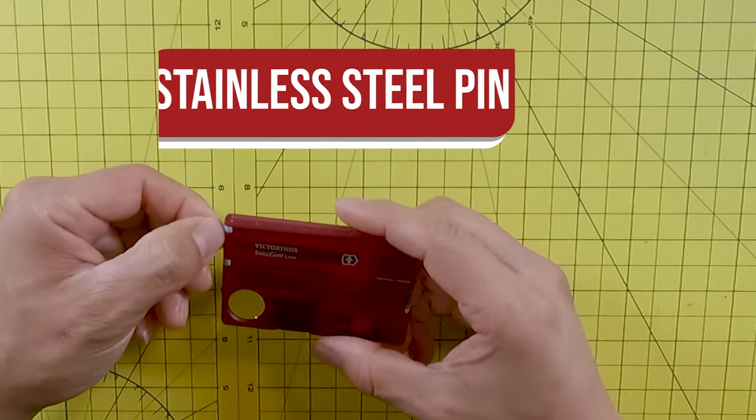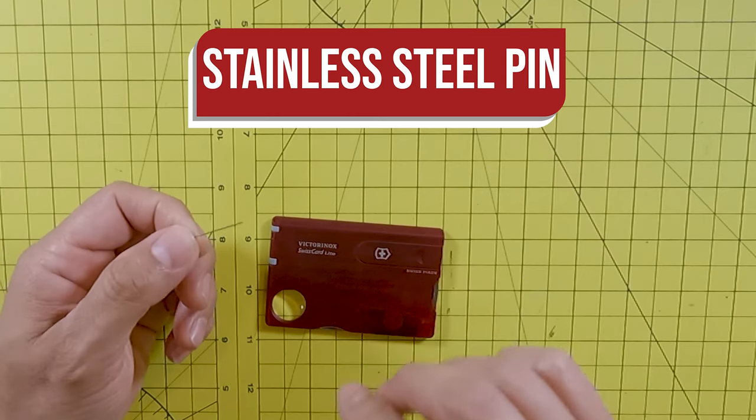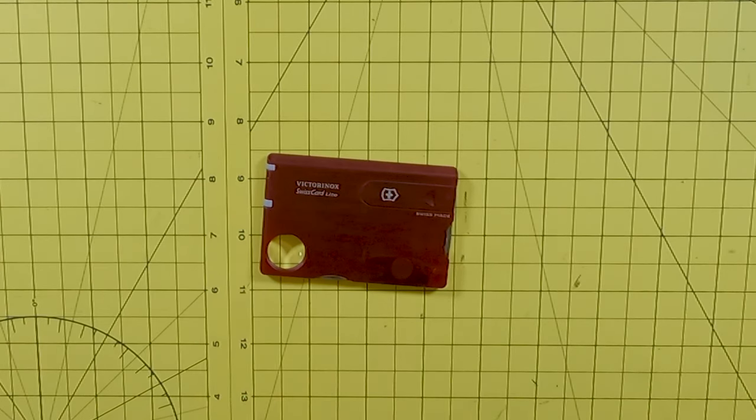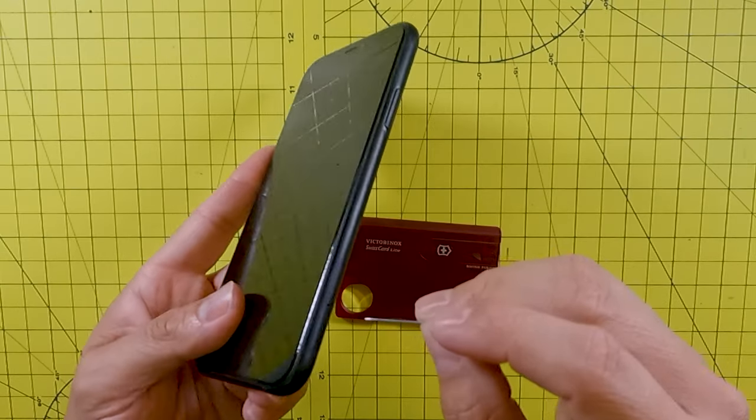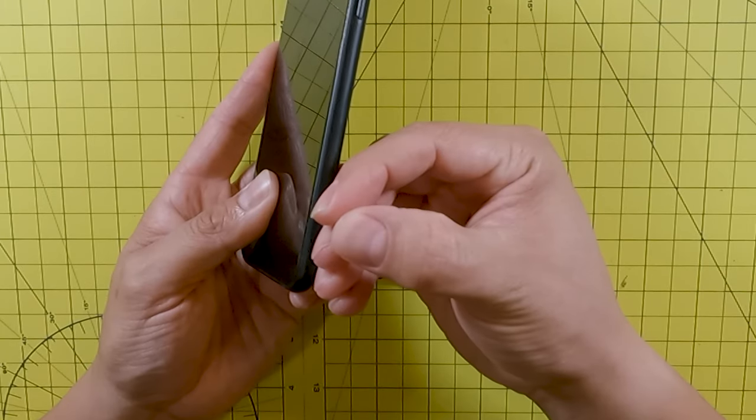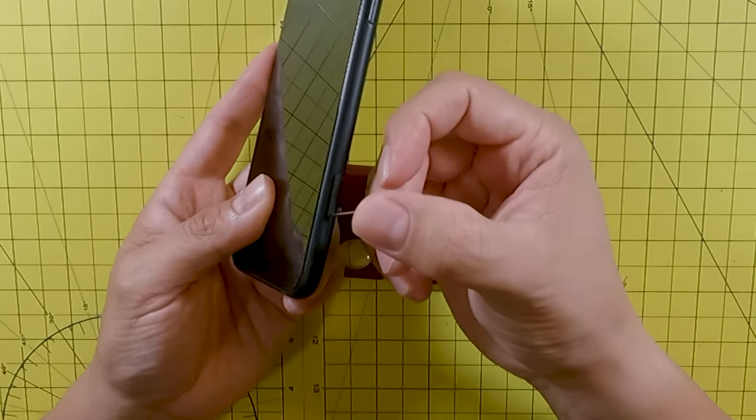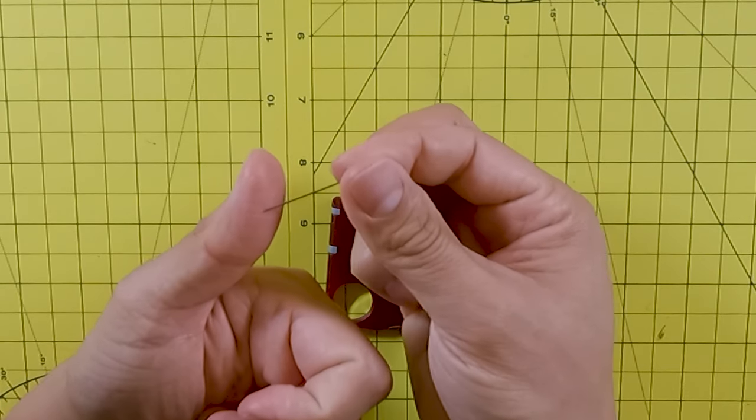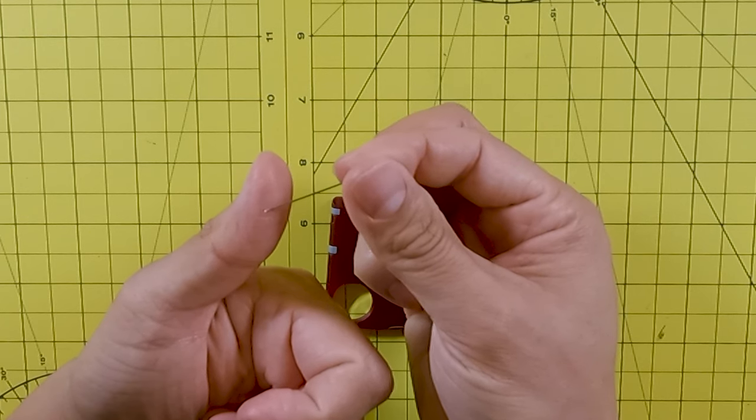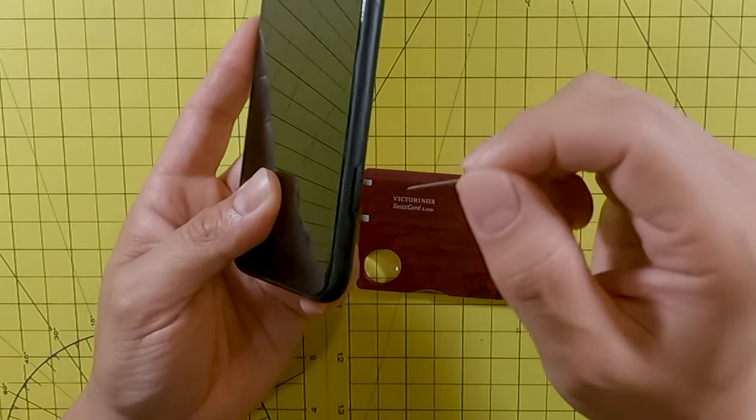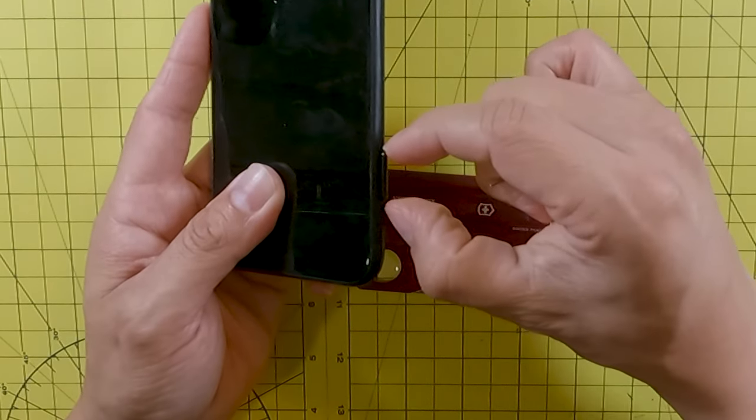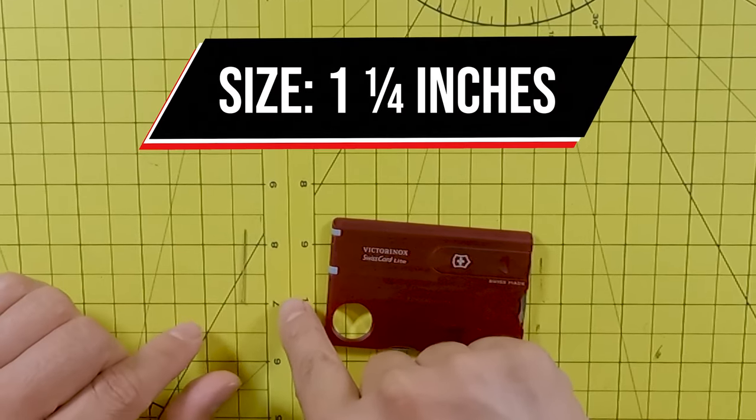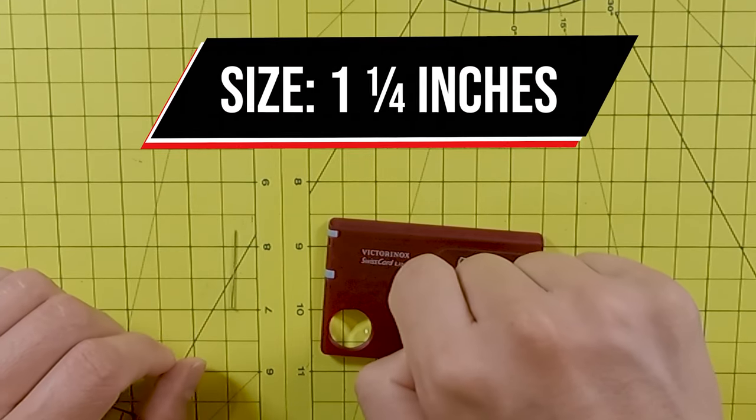Next we're looking at the stainless steel pin. The pin is stainless steel. Now this comes in handy when you're trying to open the sim card slot on your phone or when you're trying to reset some electronics that may have a needle size reset button or also if you're trying to cut open your skin to remove a splinter. It's a good thing it is included in this multi-tool. The size of the stainless steel pin is one and one-fourth of an inch.